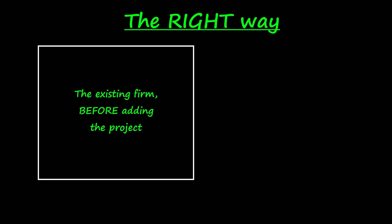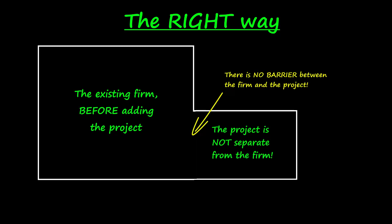The right way to identify relevant cash flows is to start with a clear understanding of what exactly is going on in capital budgeting. Firstly, you must think about the firm as a whole. This means that you can't think of the project as a closed box of cash flows, hermetically sealed off from the rest of the firm. There is no barrier between the firm and the project. The project can easily have effects on the firm outside of the project itself.